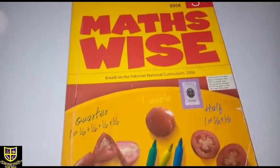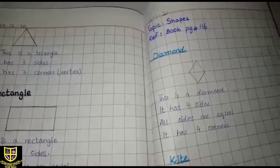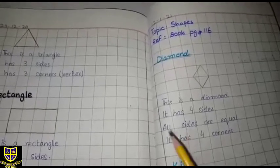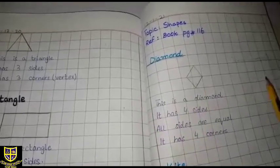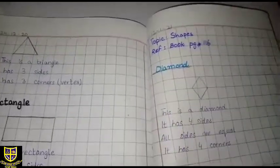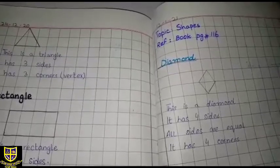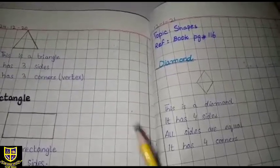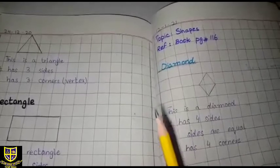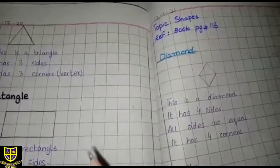Open your copies. First you have to draw margin lines on both sides. After that, you have to mention what date is today. Today is 12-1-2021, like I have done, so you also have to do it. After that, you have to write topic name.